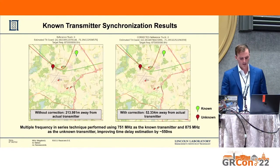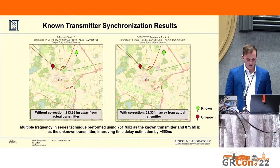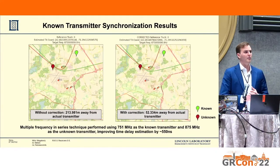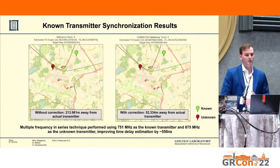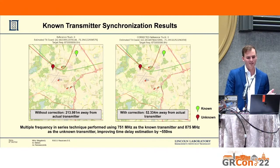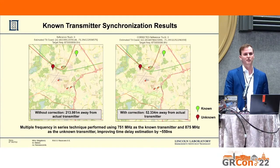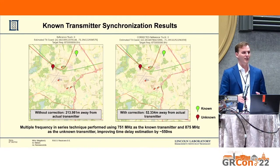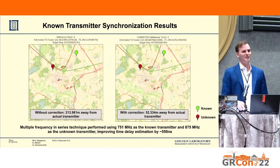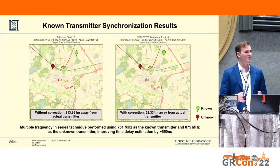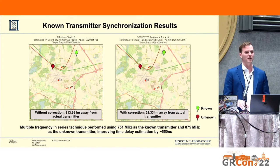Here are some results from that technique. We were initially about 213 meters away from the transmitter with our first guess. With the correction, we were able to fix our time sync by about 550 nanoseconds, which gets us down to about a 50-meter location error. In this case we actually know the true location of the transmitter, but we treated it as unknown to determine how well this technique works.